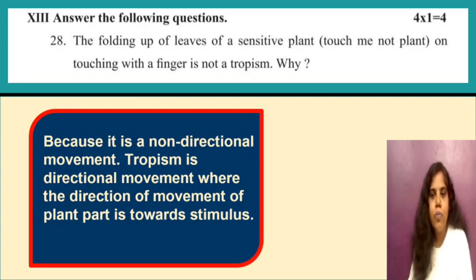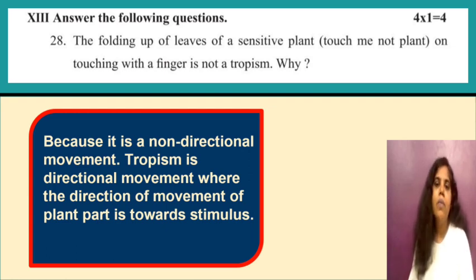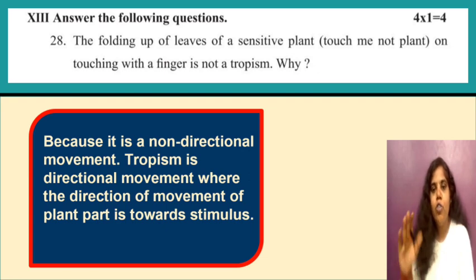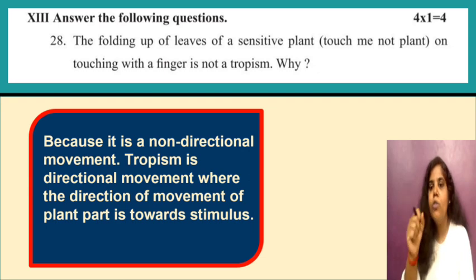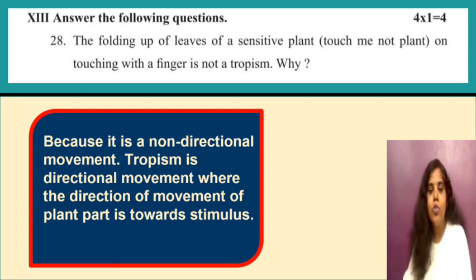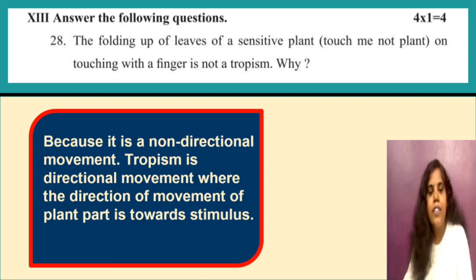The folding up of leaves of a sensitive plant on touching is not a tropism. Tropism is directional movement — for example, a plant growing towards sunlight. But the touch-me-not plant, when touched, just closes; it is not moving towards or away from a stimulus. This is a non-directional movement, and tropism requires directional movement of the plant part towards the stimulus.